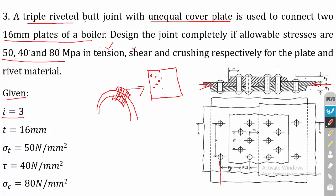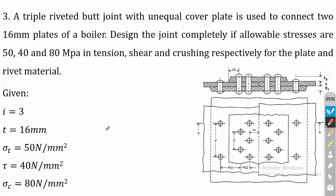Looking at the rows: this is the first row, this is the second row, and this is the third row. The number of rivets refers to the number of rows of rivets, so here i = 3. The plate thickness is directly given as 16 mm. If the plate thickness is directly given we use it; otherwise we calculate it from the steam pressure. Sigma_t = 50, tau = 40, and sigma_c = 80 N/mm².